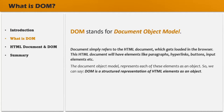DOM stands for Document Object Model. Here, 'document' simply refers to the HTML document which gets loaded in the browser. This HTML document will have elements like paragraphs, hyperlinks, buttons, input elements, etc. The document object model represents each of these elements as an object in the browser, in the DOM. So we can say DOM is a structural representation of HTML elements as objects.